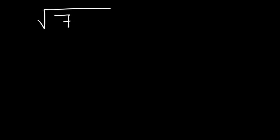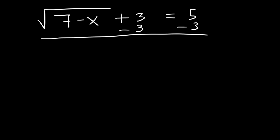Number 2: the square root of 7 minus x, plus 3, is equal to 5. We don't want to square both sides yet. We want to move the 3 from the left side to the right side, so let's begin by subtracting both sides by 3. So 5 minus 3 is equal to 2.